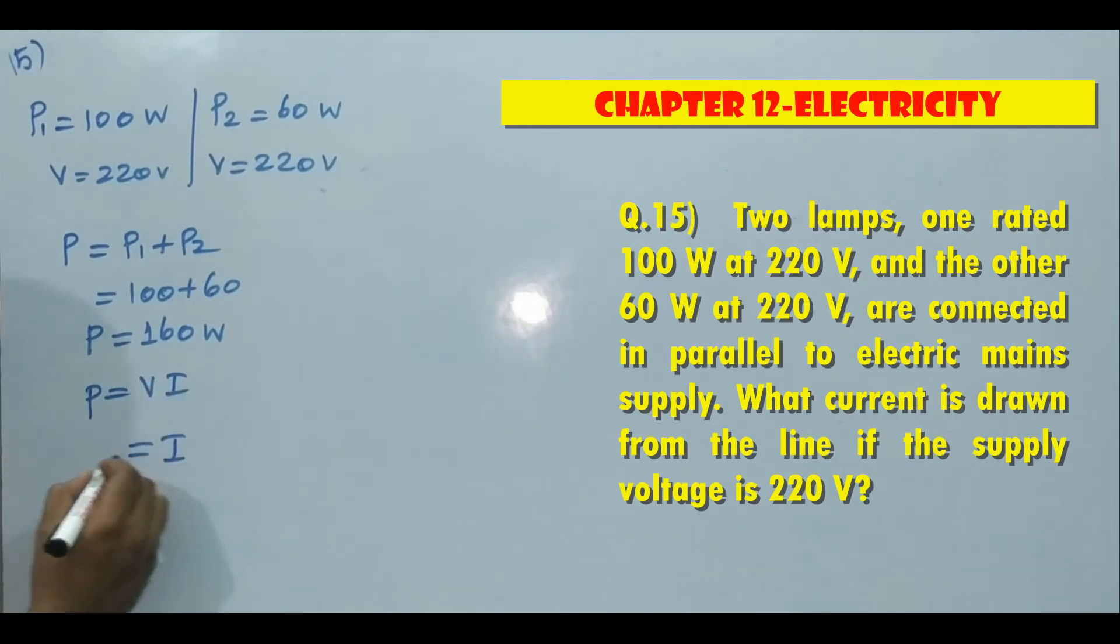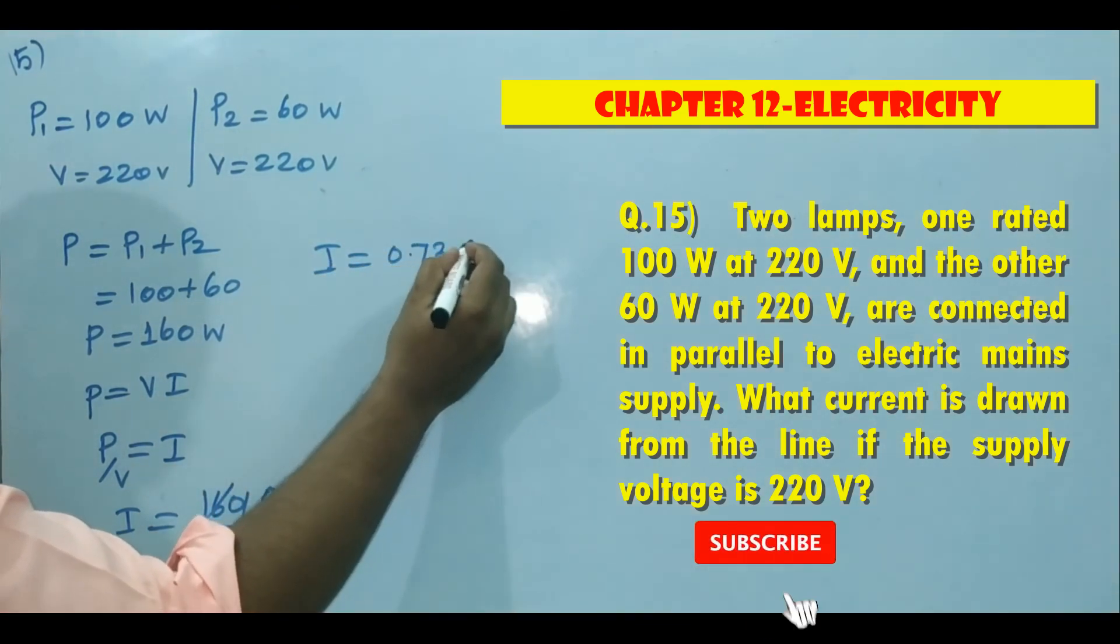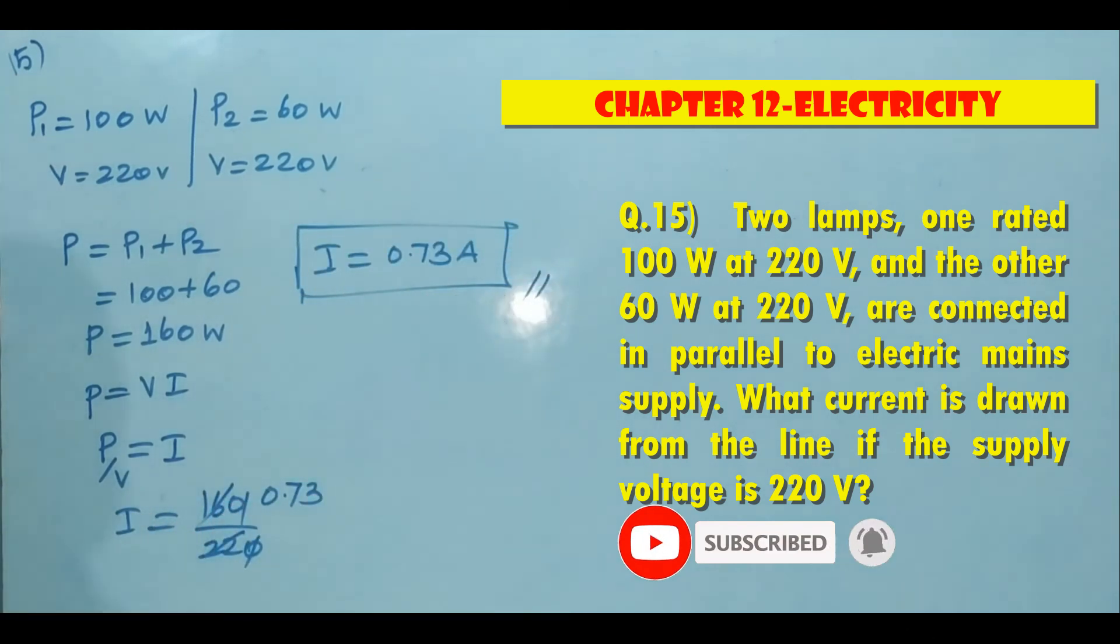Then I becomes P by V, then I is equal to - what is P here? 160 by what is V here? 220. Cancel, then it becomes 0.73. So I is 0.73, so current drawn here is 0.73 ampere.